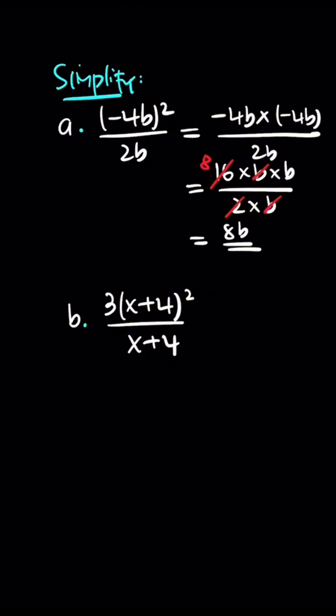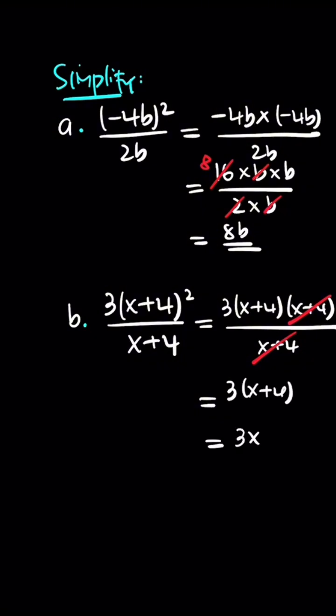3 times (x + 4)² out of x + 4. This can be simplified by distributing 3(x + 4)(x + 4) out of x + 4. This can be cancelled and that's remaining 3(x + 4). Now you can expand 3x + 12.